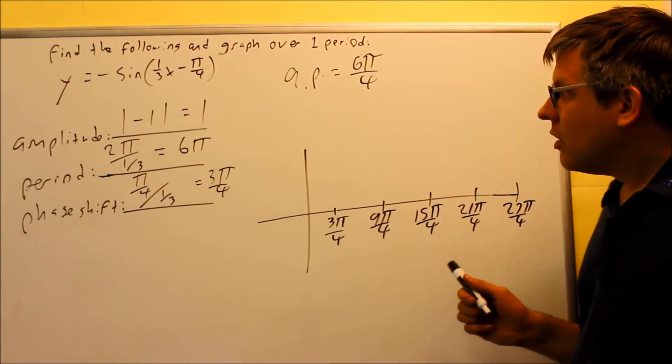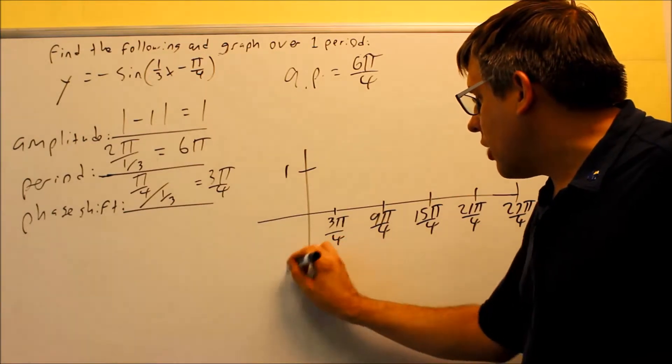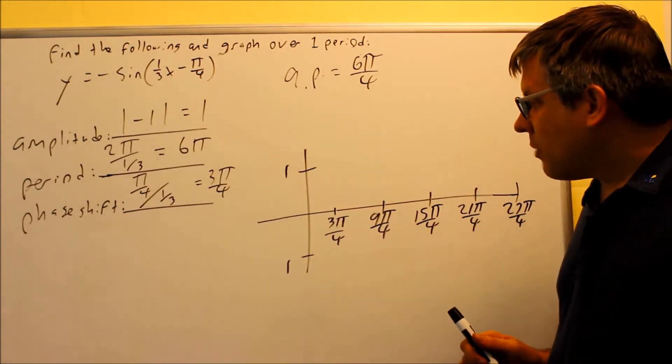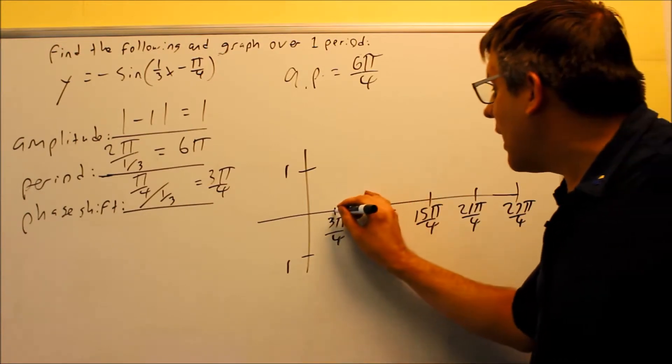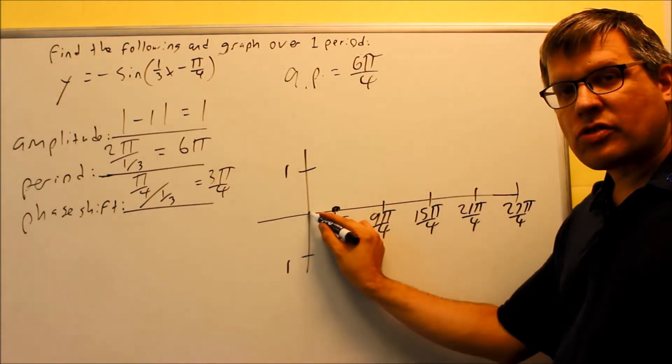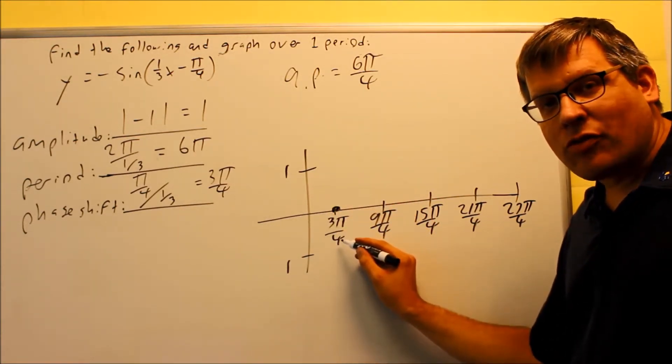So I have all these here. The amplitude is 1, and so I have 1 and negative 1 on my graph here. And my sine graph has to start on the x-axis. I'm not starting it here at 0 because the graph got shifted to the right. The graph has to begin here at 3π/4.